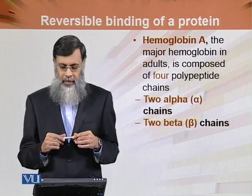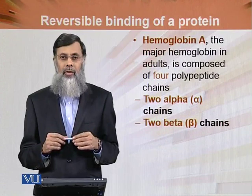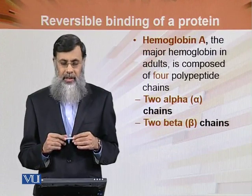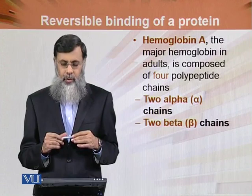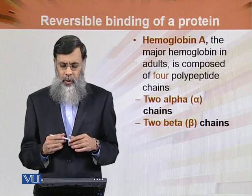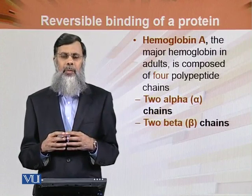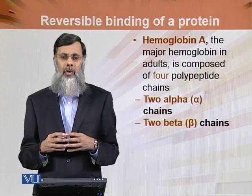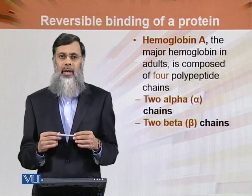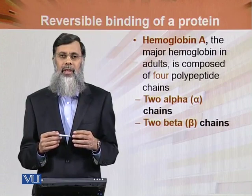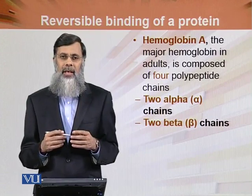Hemoglobin A, the major hemoglobin in adults, is composed of four polypeptide chains: two alpha chains and two beta chains. Hemoglobin F and hemoglobin A2 are also present, but hemoglobin F is found mainly in fetal life.